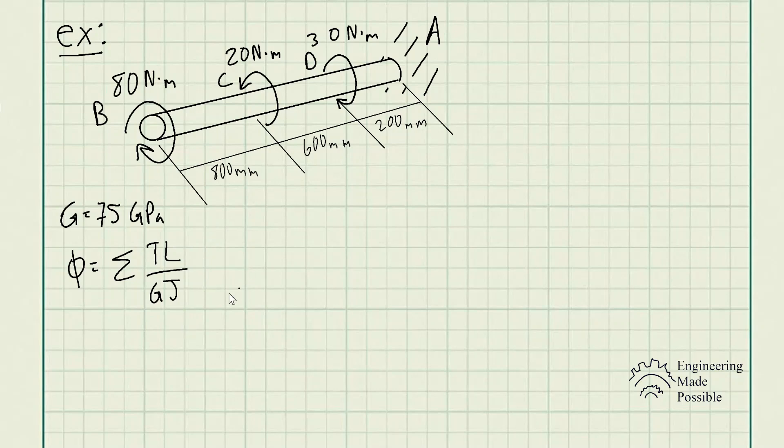So we know that the shear modulus of this material is the same throughout all these locations B, C, and D, and the polar moment of inertia is also the same. So we can actually factor out the shear modulus and polar moment of inertia: 1 divided by GJ times the sum of the torques times the lengths. So let's go ahead and do that.